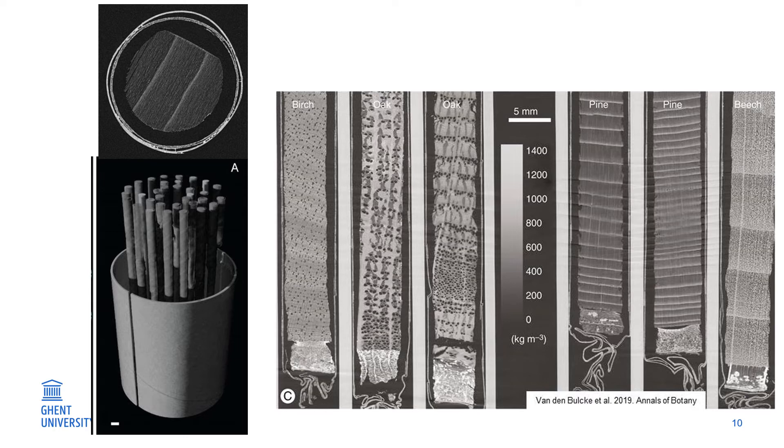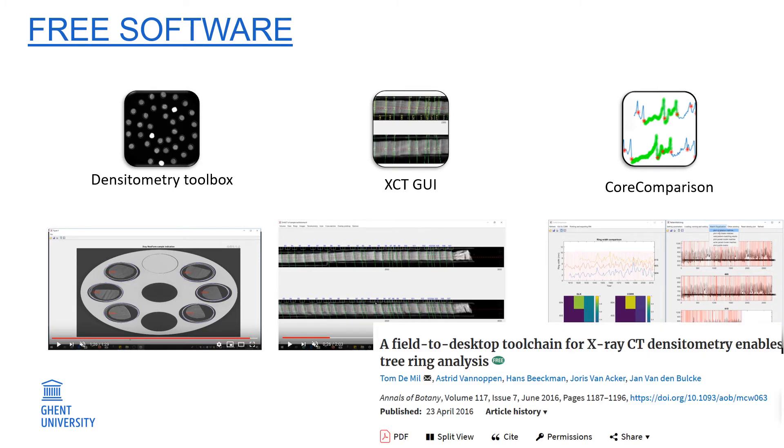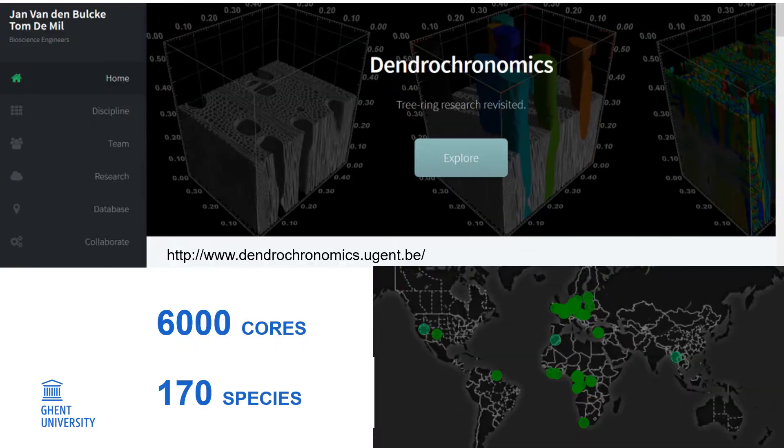On our dendrochronomics platform, there's free software available that allows you to extract the virtual tree cores, indicate the tree rings, and export the data. This was published before, but now we also have a website showing where you can download the software and see all our research.